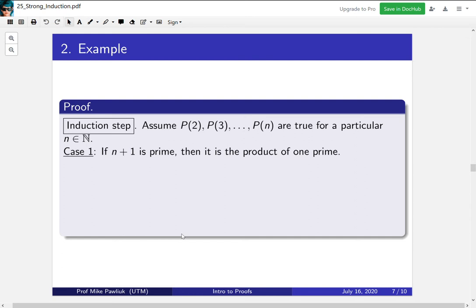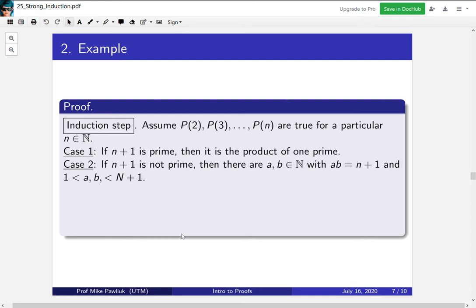Now the more interesting case is what do we do if n plus 1 is composite, if it's not prime? So if it's not prime, that means that there are factors a and b that we can write n plus 1 as a times b. And moreover, a and b have to be small, they have to be less than n plus 1, they also have to be greater than 1. That's what it means to be not prime, is that there are non-trivial factors.